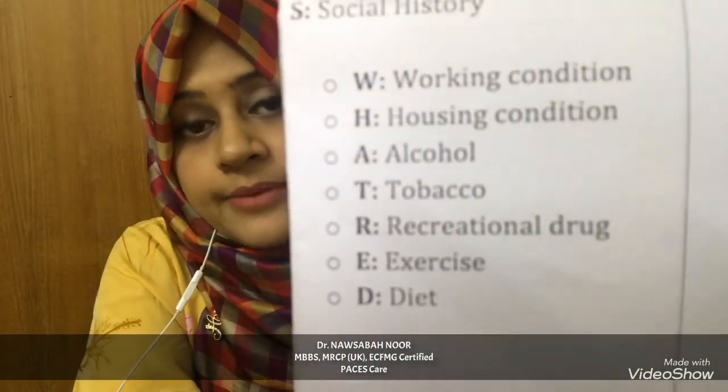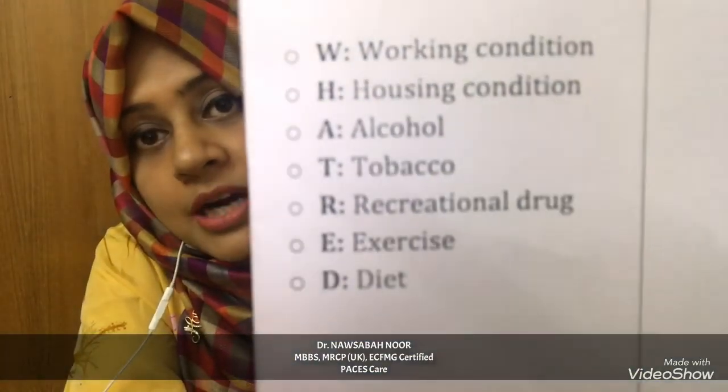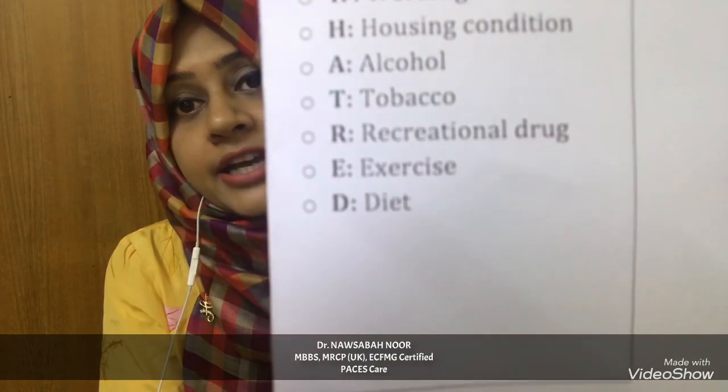The last S in FOSS is for social history, using the mnemonic WHATRED. W for working condition and H for housing condition — how the chief complaint affects occupation and home life, whether the patient needs help with mobility or daily activities, and what support is available through occupational health or social services. A for alcohol, T for tobacco, R for recreational drugs — advise the patient to quit and refer if needed. E for exercise and D for diet.